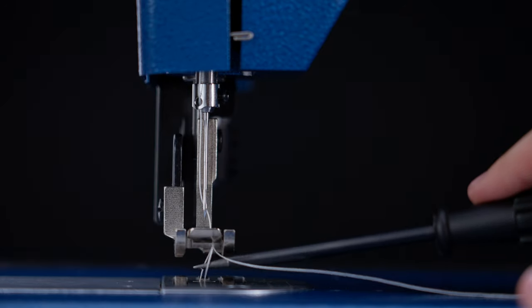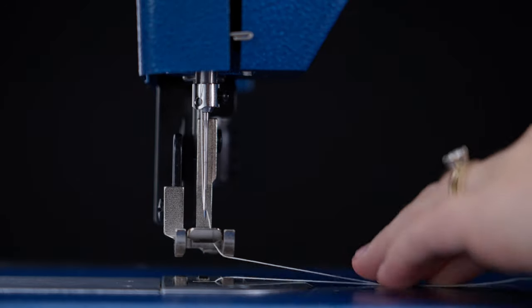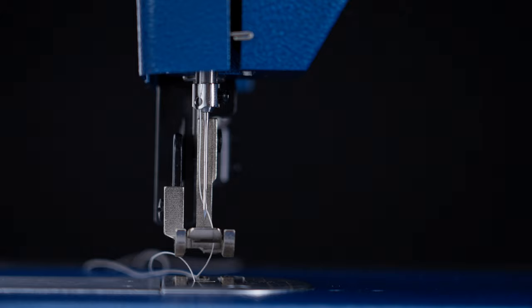You can pass a small tool—we're just going to be using a screwdriver—under the presser foot to pull the thread out of the way from the machine.